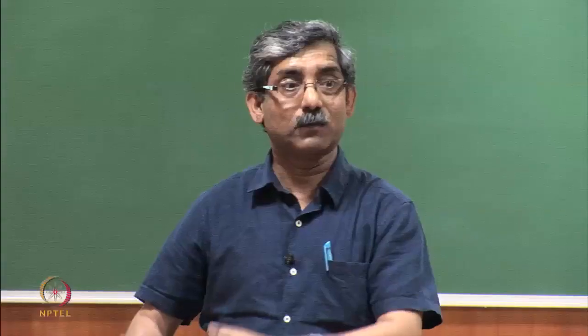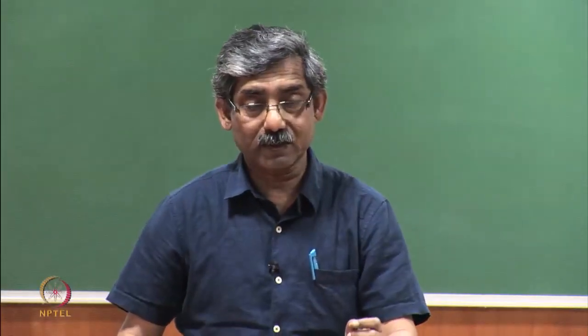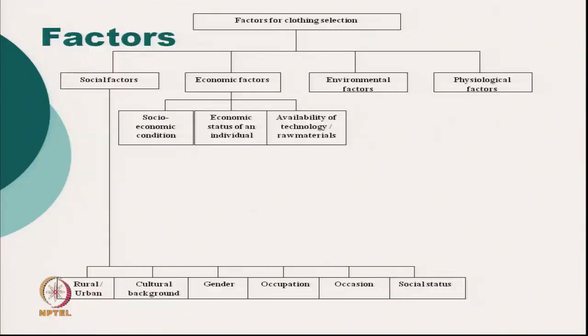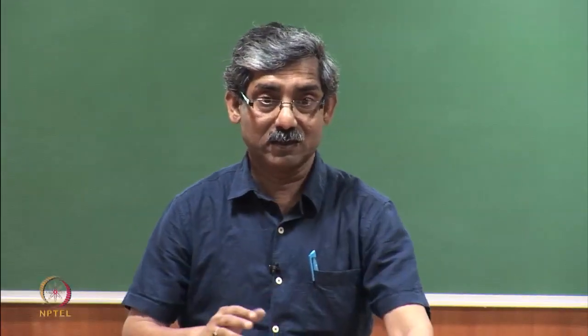The economic factor is divided into 3 sub-factors: the socioeconomic condition of the society, the economic status of the individual person, and the availability of raw material and technology for a particular zone or country. Depending on these factors, the person selects their clothing.